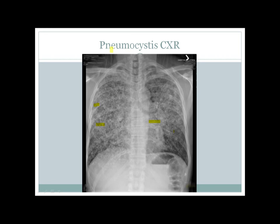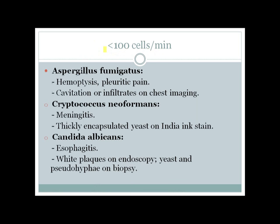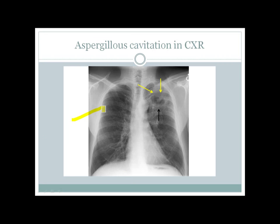If the cell count is less than 100 cells per cubic millimeter, infections include Aspergillus fumigatus, which can cause infiltrates or cavitation on chest imaging, with the patient presenting with hemoptysis or pleuritic pain. There can be meningitis with Cryptococcus neoformans — a CSF sample stained with India ink will show thickly encapsulated yeast. The patient can have severe systemic Candida infection with Candida albicans causing esophagitis — endoscopy shows white plaques, and biopsy shows pseudohyphae and yeast.